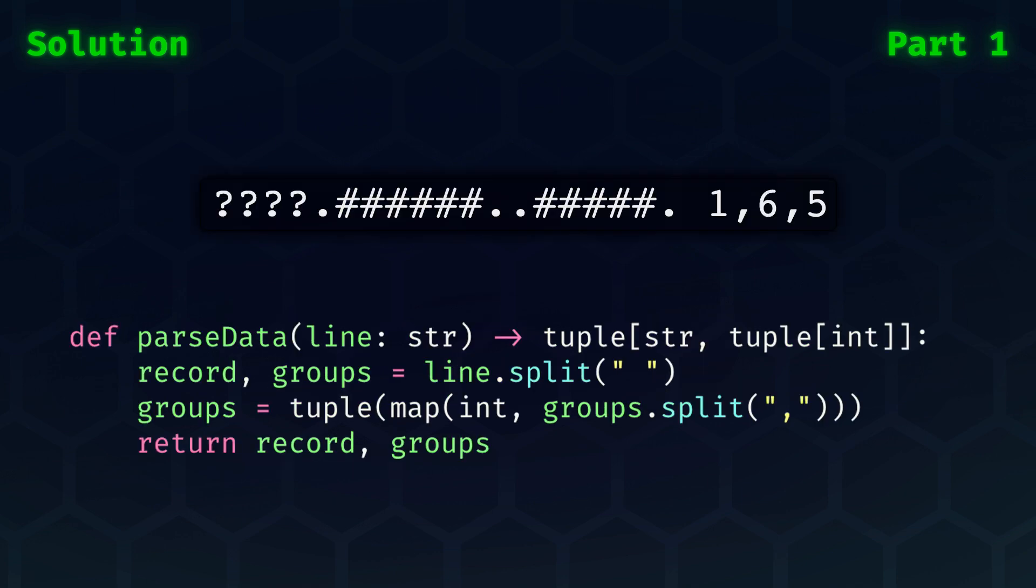Parsing the data is fairly simple. Note that instead of us storing the groups as a list of integers, we store them as a tuple. Both are valid solutions for part one.